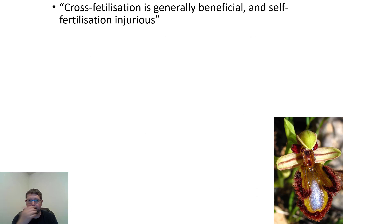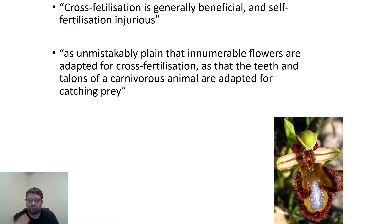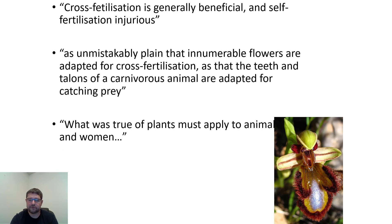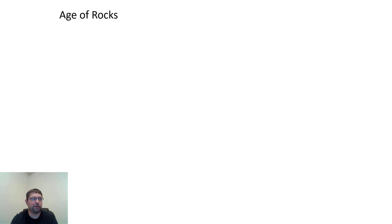Darwin worked on cross-fertilization and noted that self-fertilization is injurious — you should crossbreed and outbreed because it is genetically beneficial. He wrote extensively about cross-fertilization and how important it was not to breed within your own gene pool. He even stated that what was true of the plants he was working on must be applied to animals and humans. So without really knowing it, he was doing research on genetics and the outcomes of inbreeding.